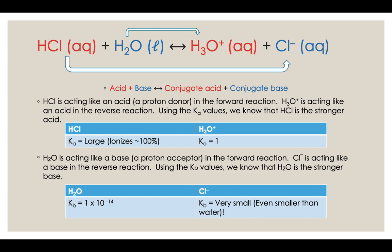If you look at the Ka value, you can determine that HCl is a stronger acid because it has a larger Ka value. When you look up the Ka values of strong acids, they always just say 'large' — they don't even give it a number — whereas the Ka value for H3O+ is 1. Water and chloride are both acting like bases in this problem, depending on whether you're thinking about the forward or reverse reaction, both acting as proton acceptors.